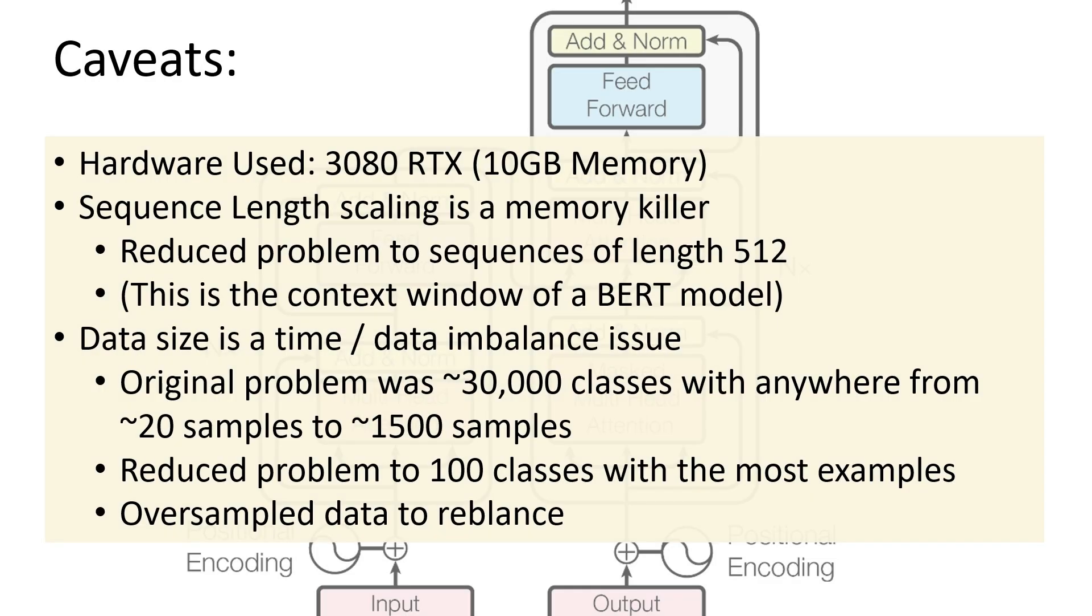Very briefly before getting into the model, I just wanted to highlight a few disclaimers. The hardware I'm using to perform training and inference is a 3080 RTX with 10 gigabytes of memory, and so this comes with two major issues. The first is that sequence length is a major memory issue, and so I had to reduce the problem to sequences of length 512 amino acids maximum. I didn't see this as a huge issue because this is the context window of a BERT model. However, if classifying proteins that are much larger than this, there are hardware considerations to be made.